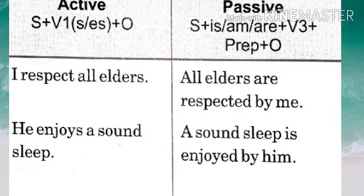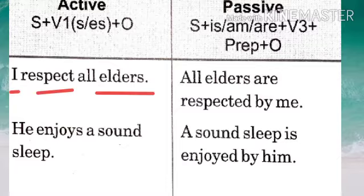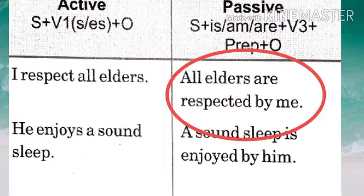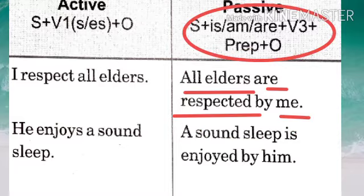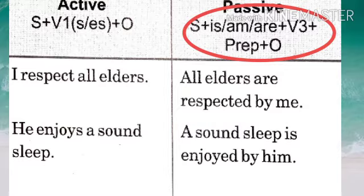Let's take an example: 'I respect all elders.' Here, 'I' is the subject, 'respect' is the verb, and 'elders' is the object. When you change it to passive voice, the answer will be: 'All elders are respected by me.' The rule to follow is: subject + is/am/are + third form of verb + preposition + object.